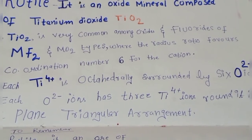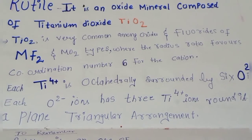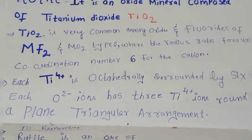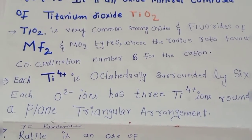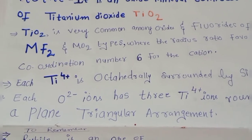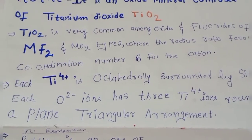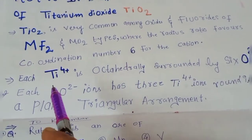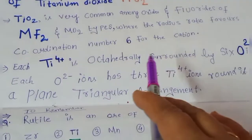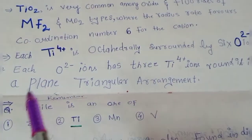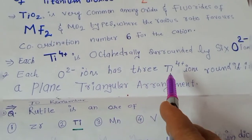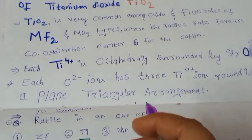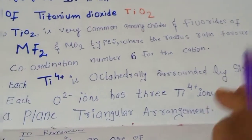Rutile is an oxide mineral composed of titanium dioxide, very common among MF₂ and MO₂ type oxides and fluorides. The radius ratio favors a coordination number of six for the cation. Each Ti⁴⁺ ion is octahedrally surrounded by O²⁻ ions, and each O²⁻ has three Ti⁴⁺ ions around it in a planar triangular arrangement.